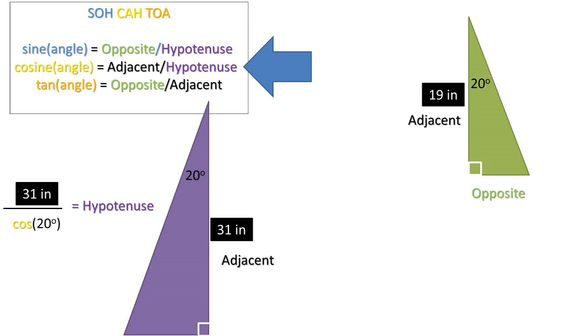Now for the green triangle, we are given the adjacent leg and want to solve for the opposite leg. Which part of SOH CAH TOA should we use? The TOA portion of SOH CAH TOA rearranged to get what we are solving for, opposite, to one side. So the 19 inch distance to the top, adjacent side length, times the tangent of the angle of 20 degrees equals the opposite side length of half of the rope length needed.